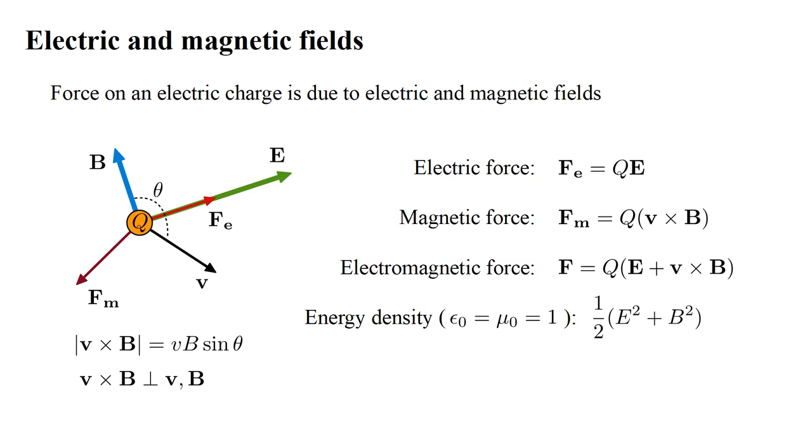It takes energy to create fields, and that energy is stored in the fields with energy density one-half quantity magnitude E squared plus magnitude B squared. Depending on the units used, this expression can contain constants, epsilon-zero and mu-zero, but we'll assume units in which these are both one.